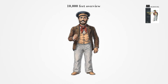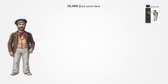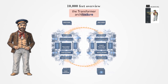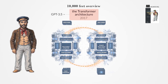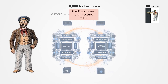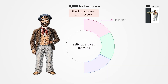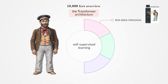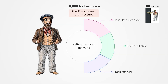The release of OpenAI's ChatGPT marked a significant milestone in the LLM revolution. The underlying technology, the Transformer architecture, was introduced in 2017 and has since enabled models like GPT 3.5 to perform complex language tasks with great accuracy. Transformers facilitate self-supervised learning, which is less data-intensive than supervised learning, allowing LLMs to predict text and perform a variety of tasks.